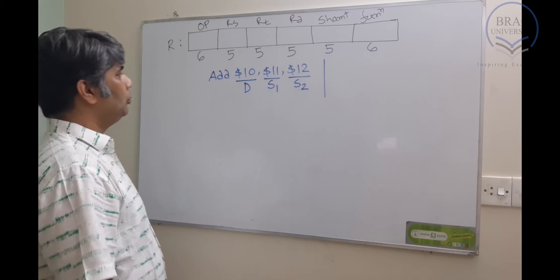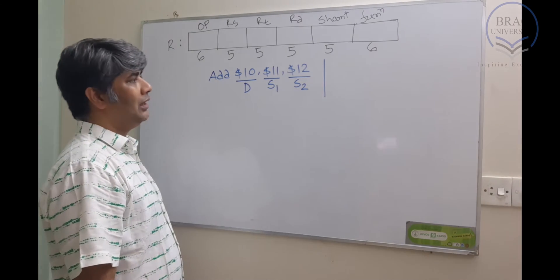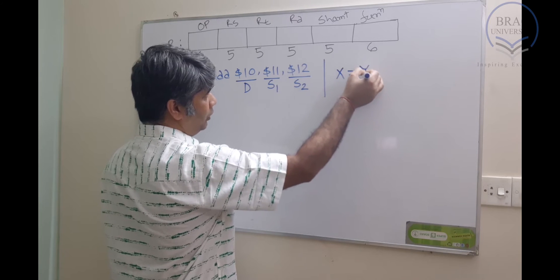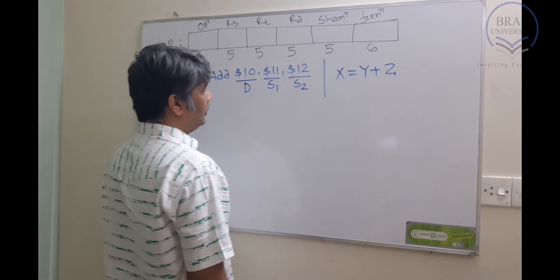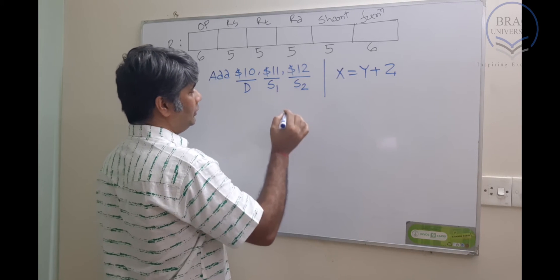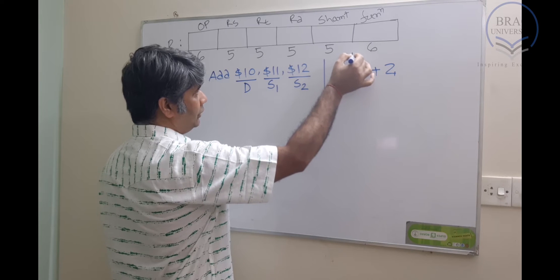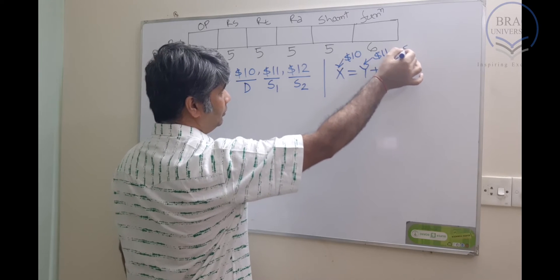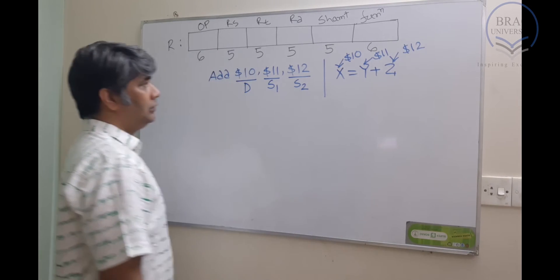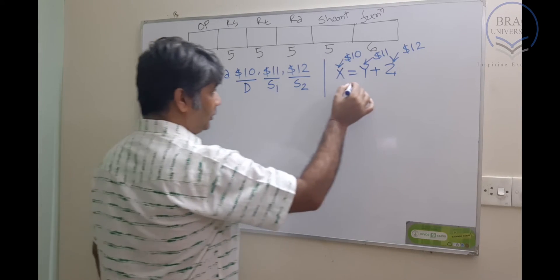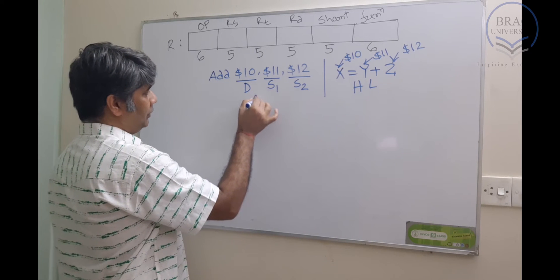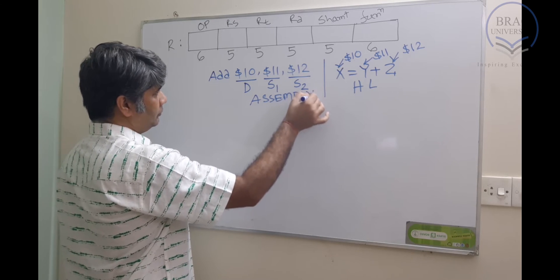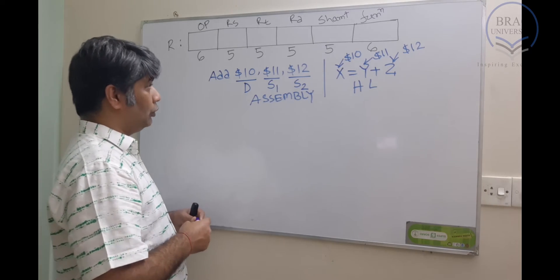Now if we try to map this instruction with high-level code, then this would look something like: x = y + z, where according to this instruction, x will be in register 10, y will be in register 11, and z will be in register 12. So this is our high-level part and this is our assembly part.